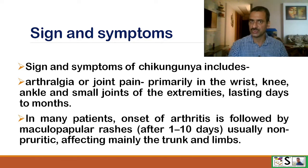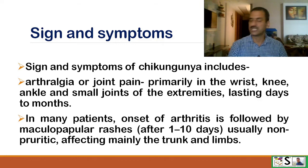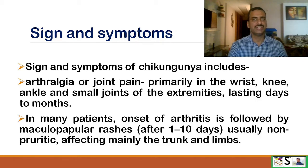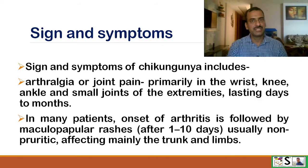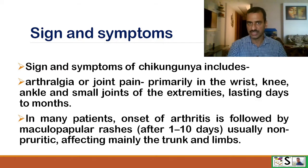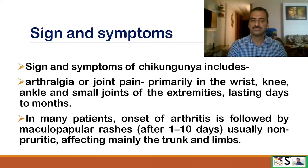Signs and symptoms of Chikungunya include arthralgia, meaning joint pain, primarily in the wrist, knee, ankles, and small joints of the hands and legs, lasting days to sometimes even months. In many patients, the onset of arthritis is followed by maculopapular rashes, which may appear after 1 to 10 days. Usually these are non-pruritic and affect mainly the trunk and limbs.